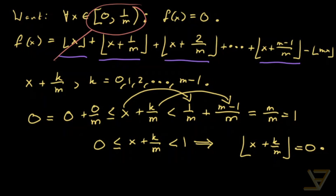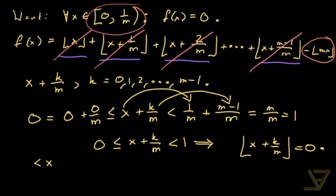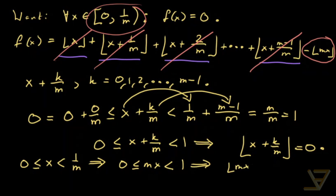So we've caused all the positive terms to vanish, and we just have the floor of mx left. Since x is in [0, 1/m), multiplying through by m gives 0 ≤ mx < 1, which means the floor of mx is also equal to 0. So f(x) = 0 on [0, 1/m), and combined with periodicity this proves Hermite's identity. Thank you for watching and I'll see you next time.